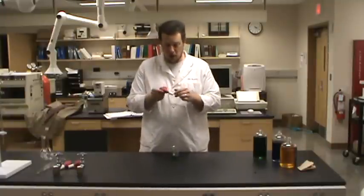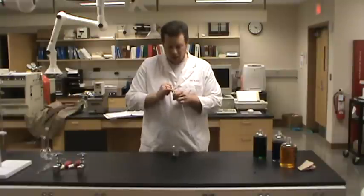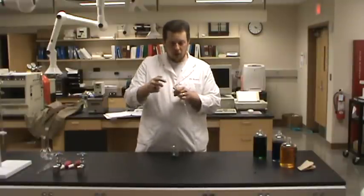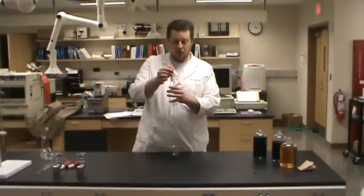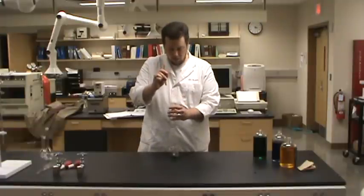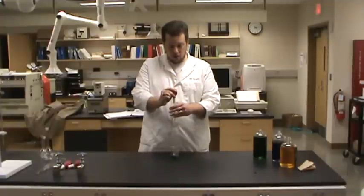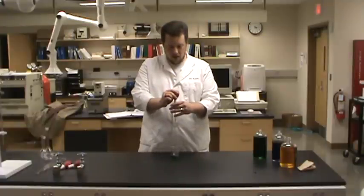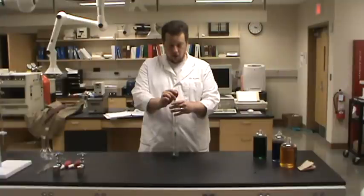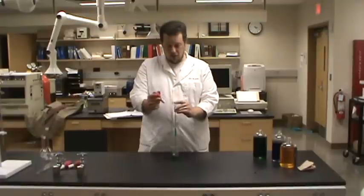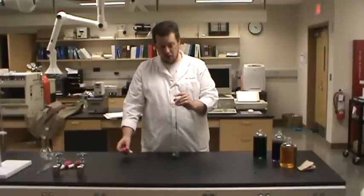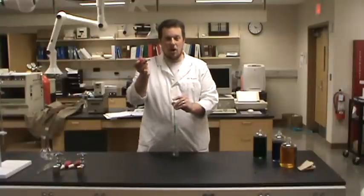Now this pipette bulb, this particular kind has a little rubber insert on the white plastic part that forms a nice tight seal. So we're going to dip the tip of the pipette into our colored liquid and use the pipette to draw it up. Now notice I'm holding on to the pipette bulb because once I get the liquid past the calibration line, I need to take this off.